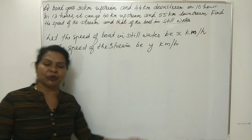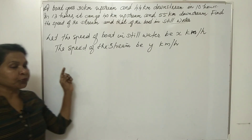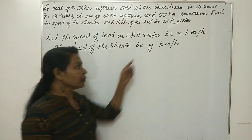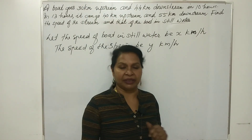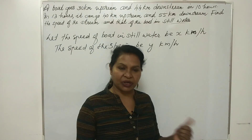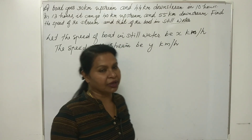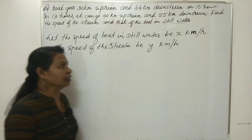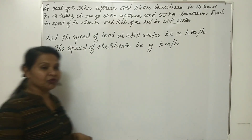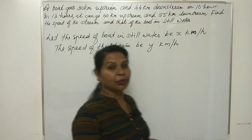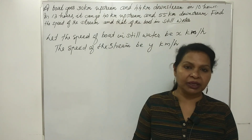The speed of the boat has two variable components depending on the stream. The speed of the boat going downstream is x plus y. The speed of the boat going upstream is x minus y.